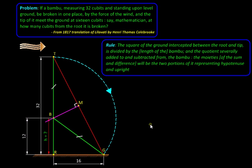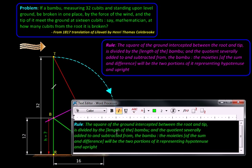Now let us see the solution given by Bhaskaracharya. It is in the same translation that I took the problem statement from. So we will read this rule and follow the recipe. This is like a set of instructions. So it says the square of the ground intercepted between the root and the tip.